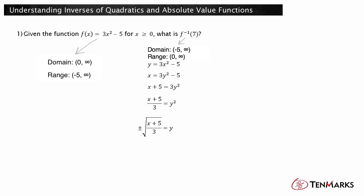For y to be greater than or equal to 0 in the inverse, the radical expression must be non-negative. Therefore, we are only looking at the positive root. f inverse equals the square root of x plus 5 over 3. Now use the inverse function to answer the question. Substitute 7 into the inverse to determine f inverse of 7. 7 plus 5 over 3 is 4, and the principal square root of 4 is 2. So the answer is 2.